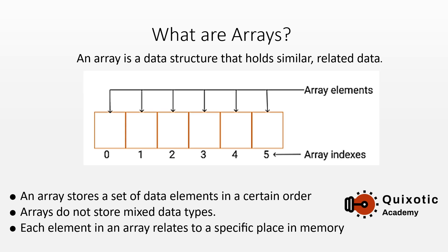Similarly, we can imagine the array as a chest of drawers — we call the chest of drawers 'student's age' and we can have drawers for every student. Arrays store data elements in a certain order, and they store data of just one type. An array of student names would store only string data.